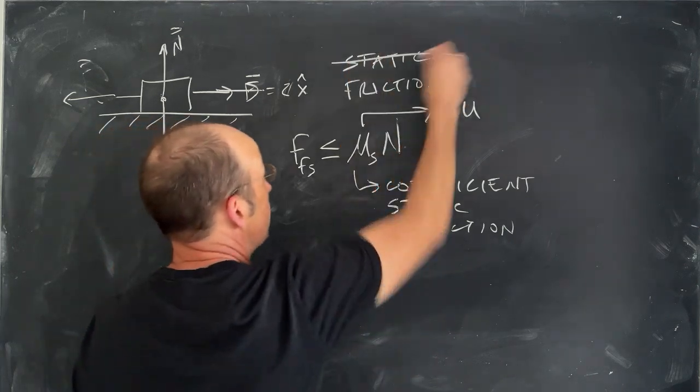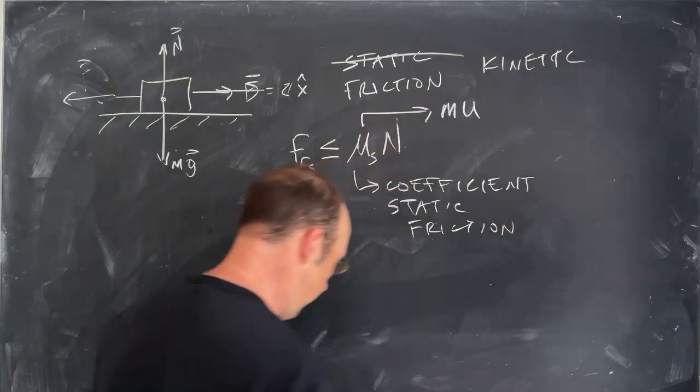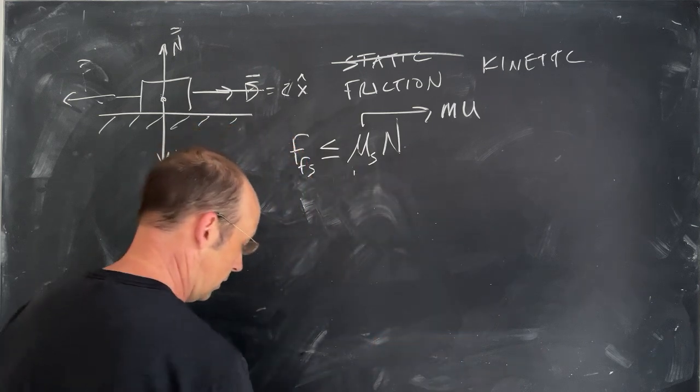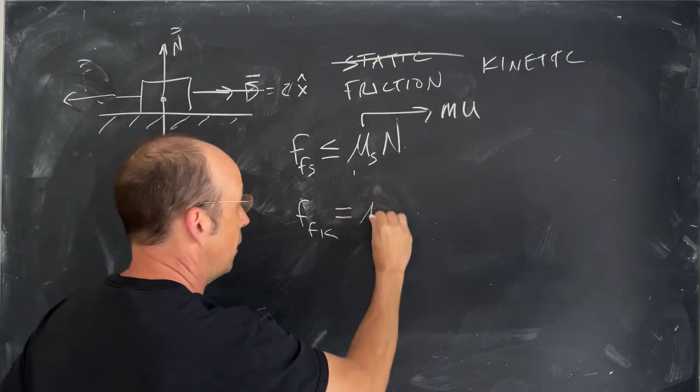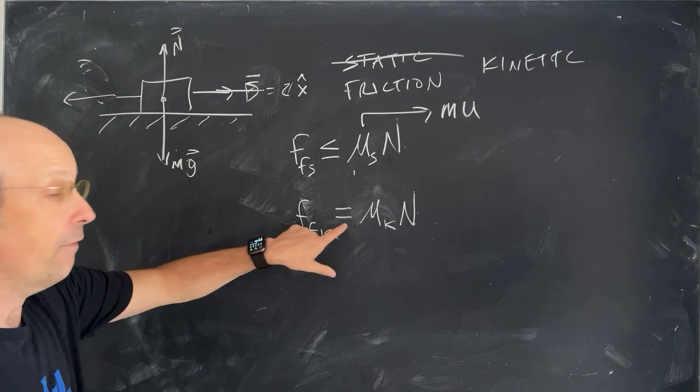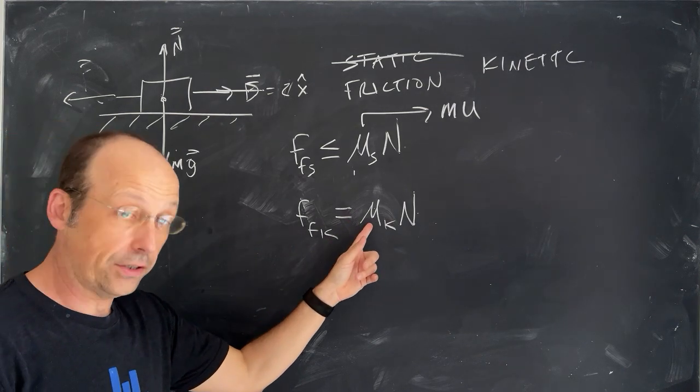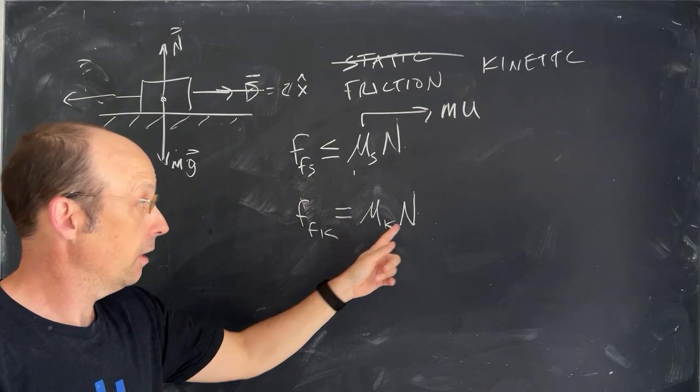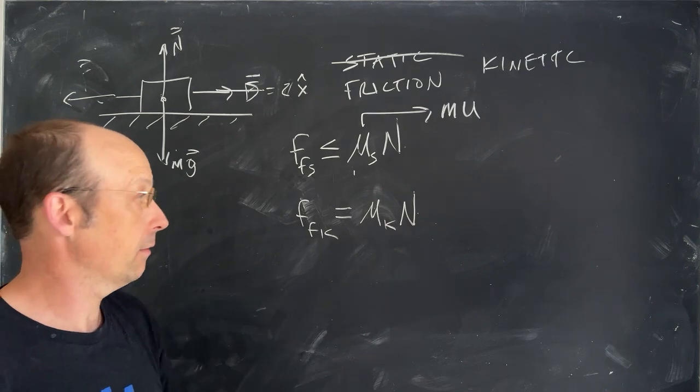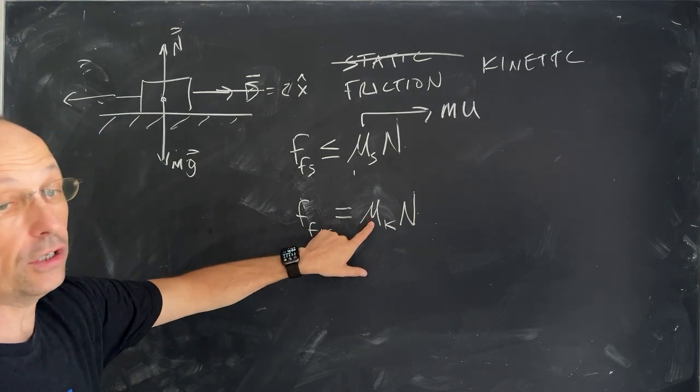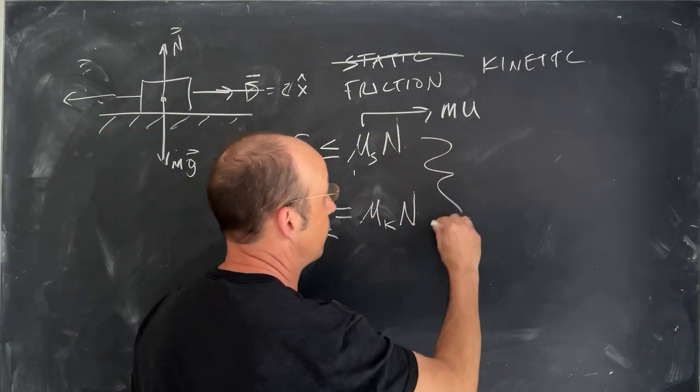Now, imagine that I take the block, I push it, and it starts to slide. It's no longer static friction. It's now kinetic friction. And we have another model for the kinetic friction, and it looks like this. F, F, K, for kinetic, equals mu K N. So, for once the thing starts to slide, there is a constant magnitude friction force that depends on the coefficient of friction, kinetic friction, and the normal force. But it's a constant value. And again, this is the normal force, not the weight. Typically, but not always, the coefficient of kinetic friction is lower than those. But those two depend on the two types of surfaces interacting.